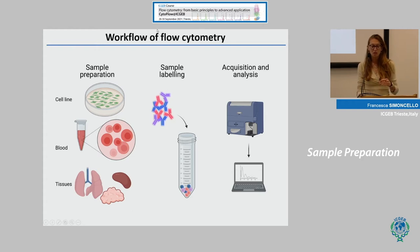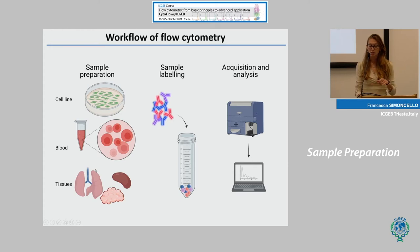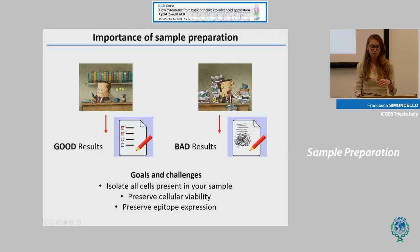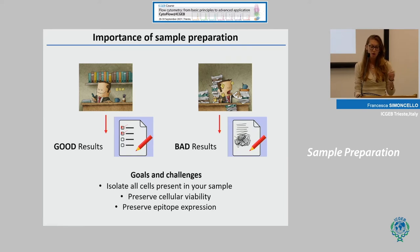In flow cytometry it's very important to proceed step by step through the workflow. First, obtain a single cell suspension from your starting point — a cell line, blood, or tissue. Once you have a single cell suspension, you can label your cells with specific antibodies conjugated with fluorophores, then acquire your sample, and lastly analyze your data. Sample preparation is the first step and can determine the quality of your final results. In this first step it's important to find the best procedure to obtain not only a single cell suspension, but also to isolate all cells present in your sample.